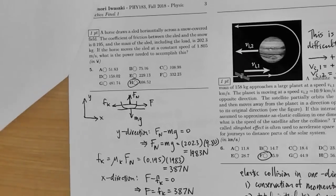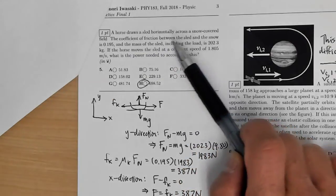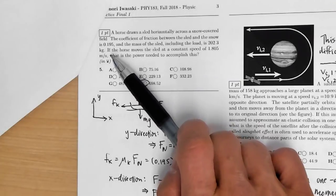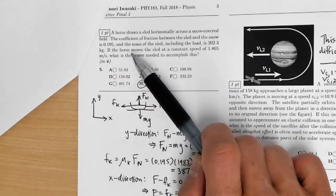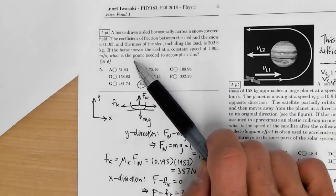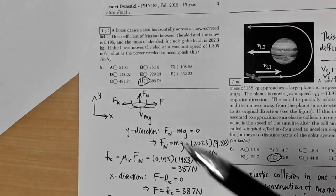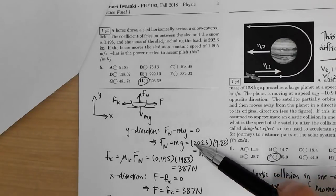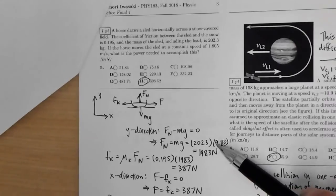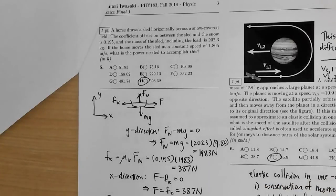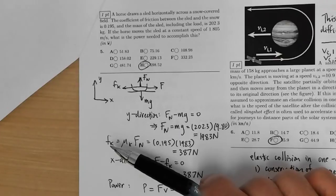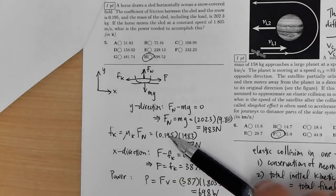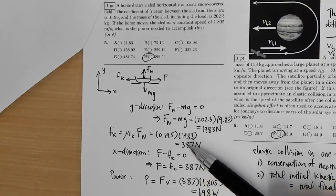A horse is drawing a sled horizontally across a snow-covered field. The coefficient of friction is 0.195 and the mass of the sled including the load is 202 kilograms. The sled moves at a constant speed of 1.805 m/s. In the y-direction, the normal force balances gravity: 202 kg × 9.8 = 1,983 N. The force of kinetic friction is μk times the normal force: 0.195 × 1,983 = 387 N.